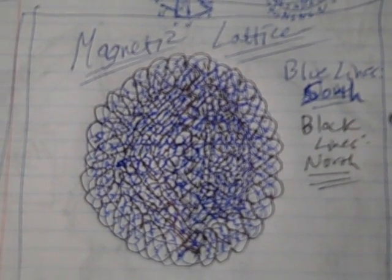And what I have is what I'm calling here a magnetic lattice, the kind of magnetic lattice work or architecture that undergirds everything in reality.